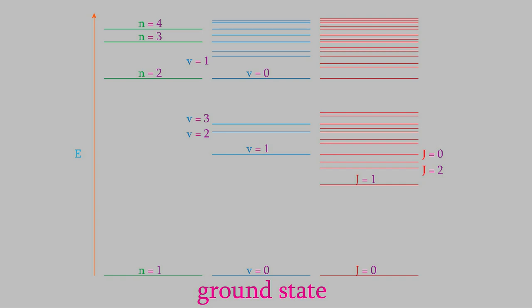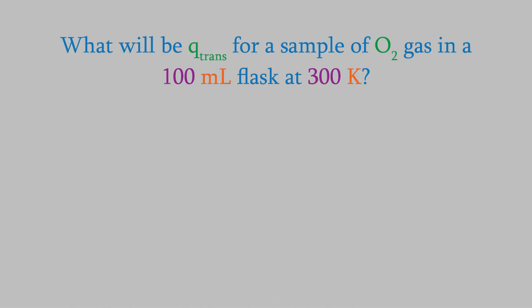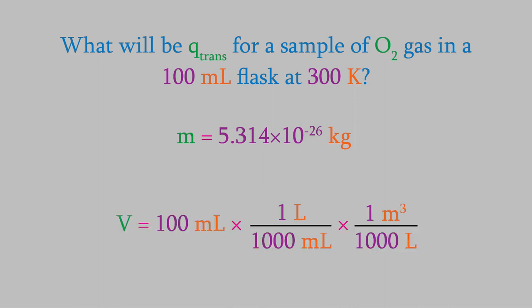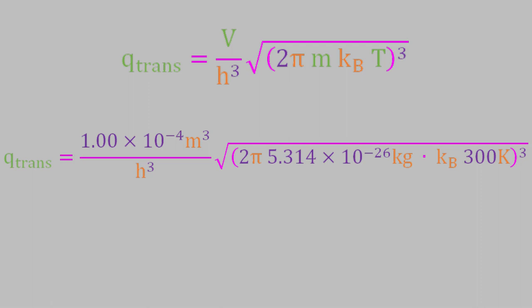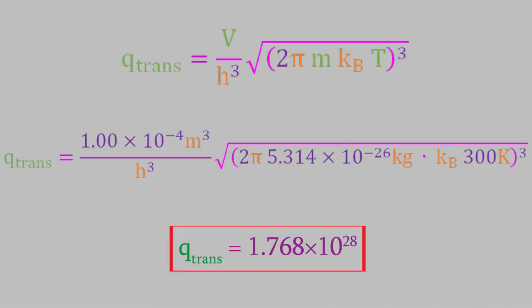Let's try one more example. What's the partition function for a sample of oxygen gas at 300 K in a 100 mL flask? The mass is the same — 5.314×10⁻²⁶ kg — but the volume is 100 mL = 1×10⁻⁴ m³. Plugging these values in, the partition function equals 1.768×10²⁸. This is far larger than the previous problem because the volume is much larger, so many more translational energy states are available for the molecules.